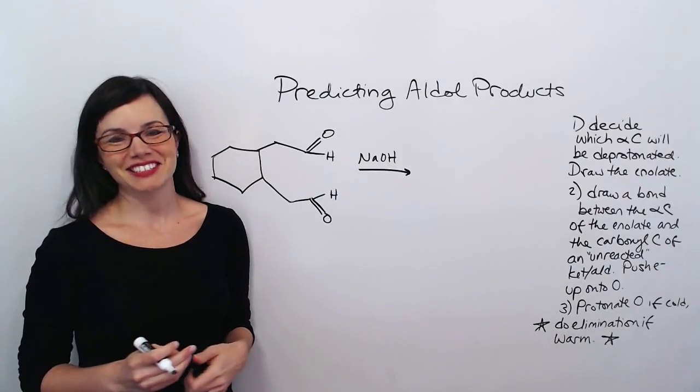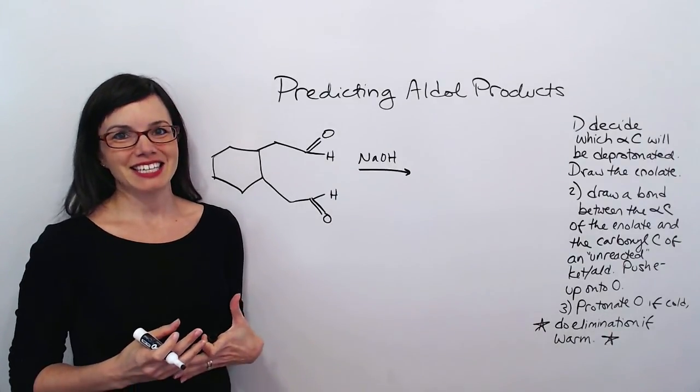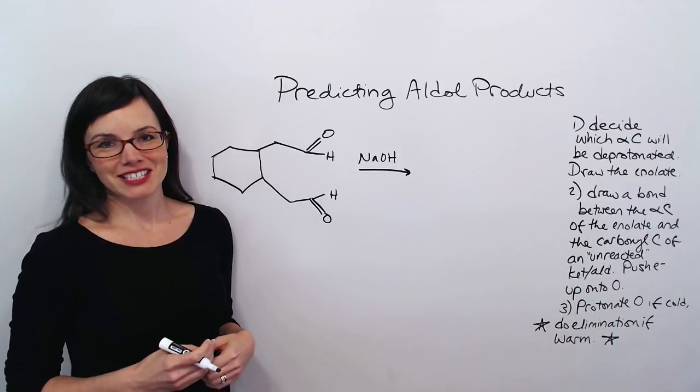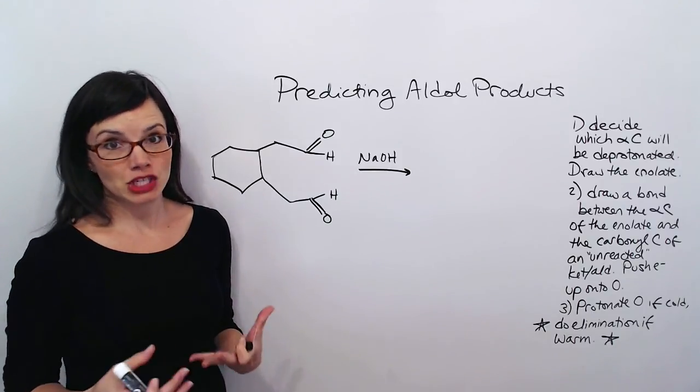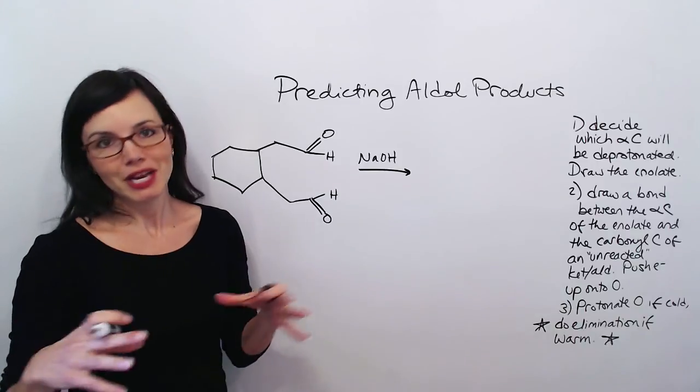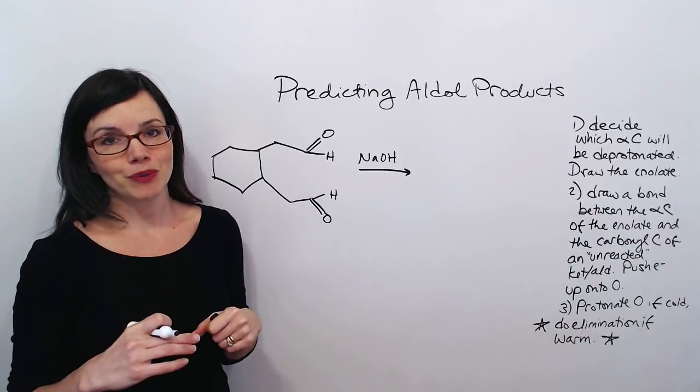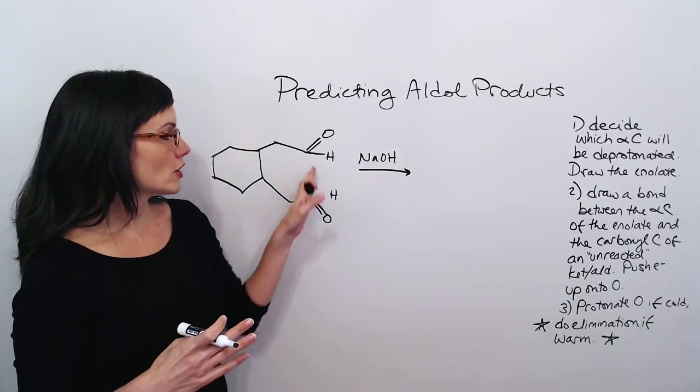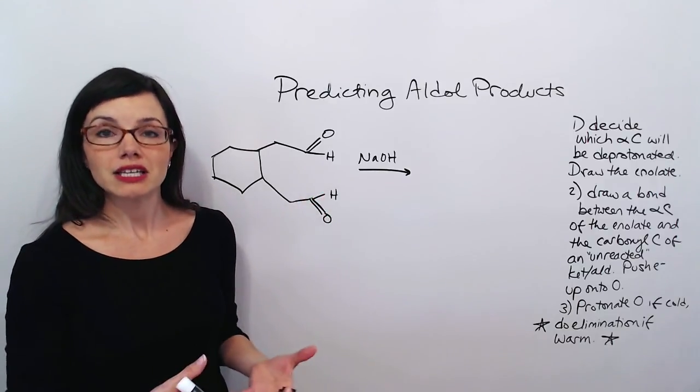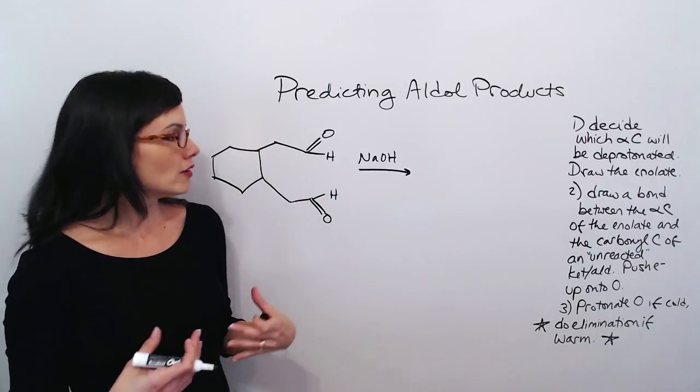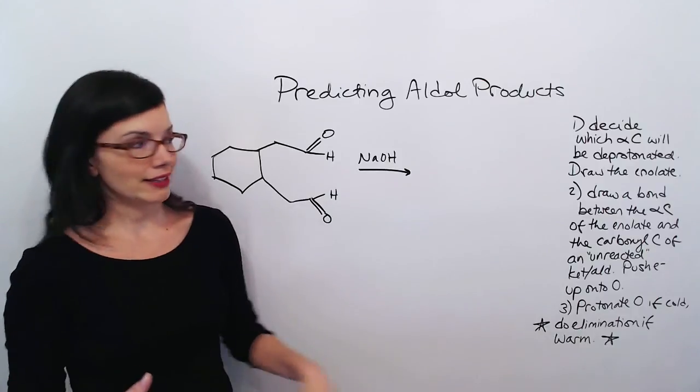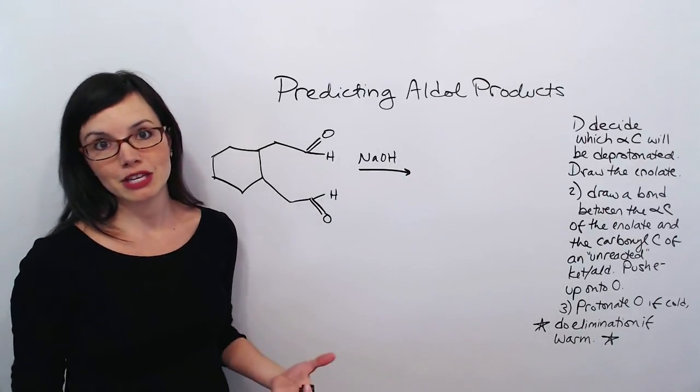This reaction is a little intimidating the first time you see it. This is an intramolecular aldol condensation, and we know it's going to be intramolecular, which means the reaction occurs within a molecule, because there are two ketone or aldehyde functional groups in the same molecule. When you see one of these, you don't panic. You follow the exact same steps that you already know.